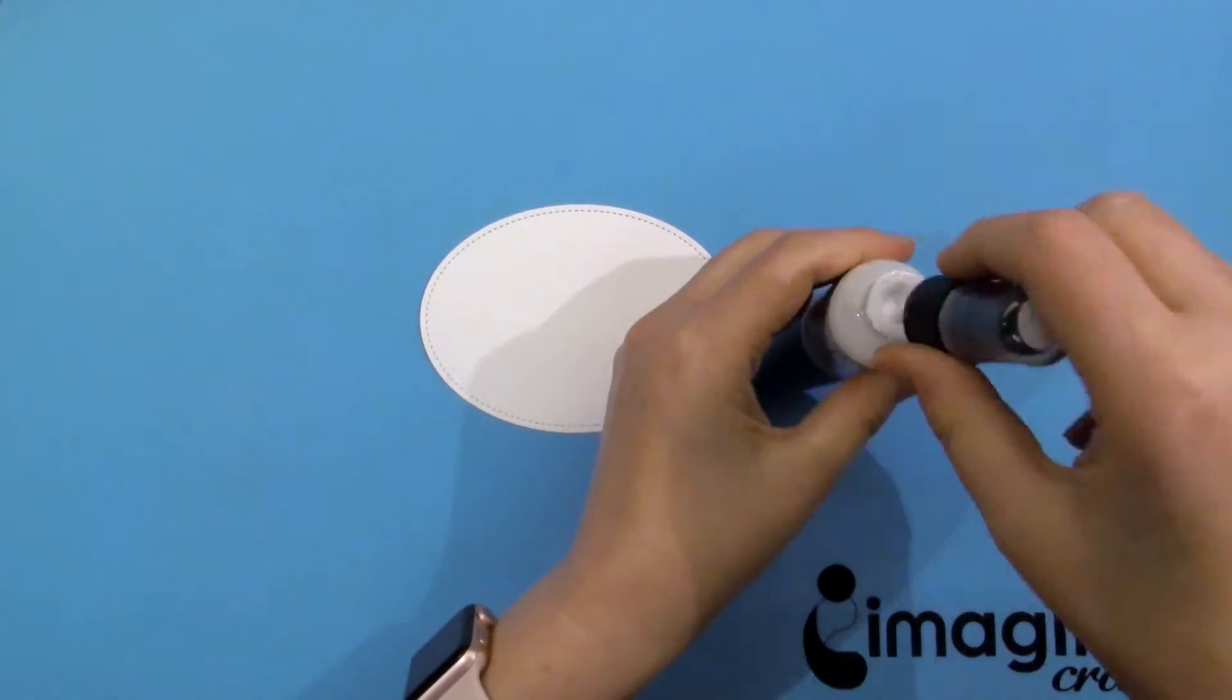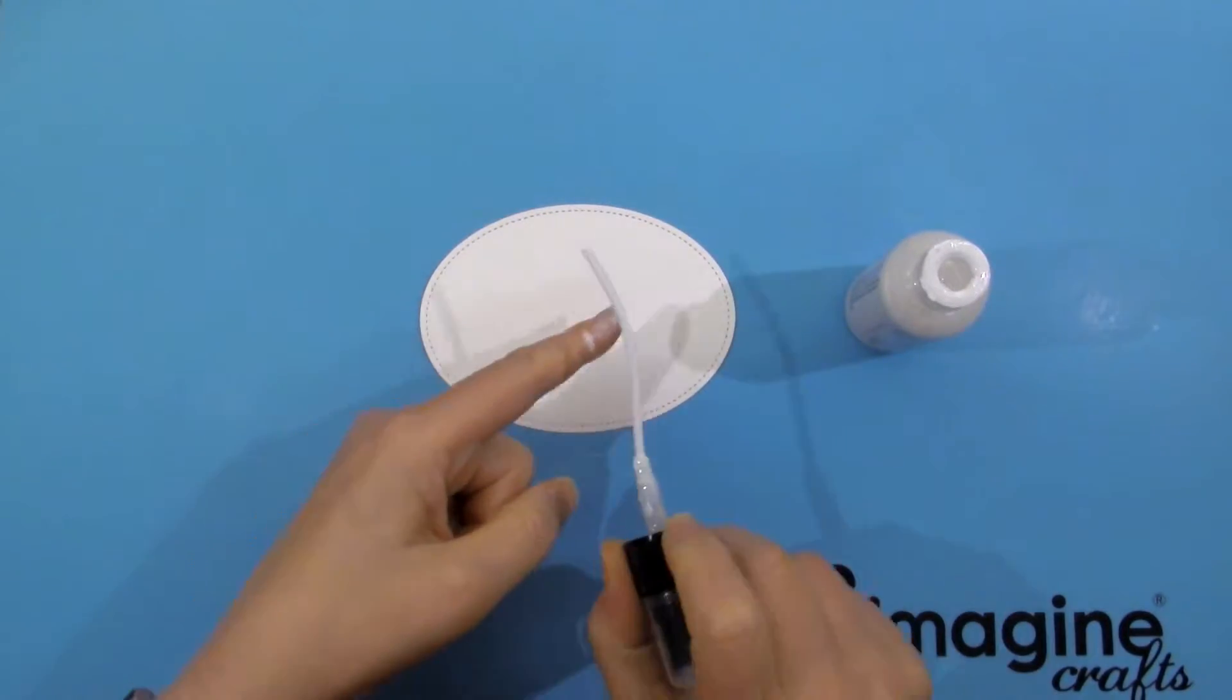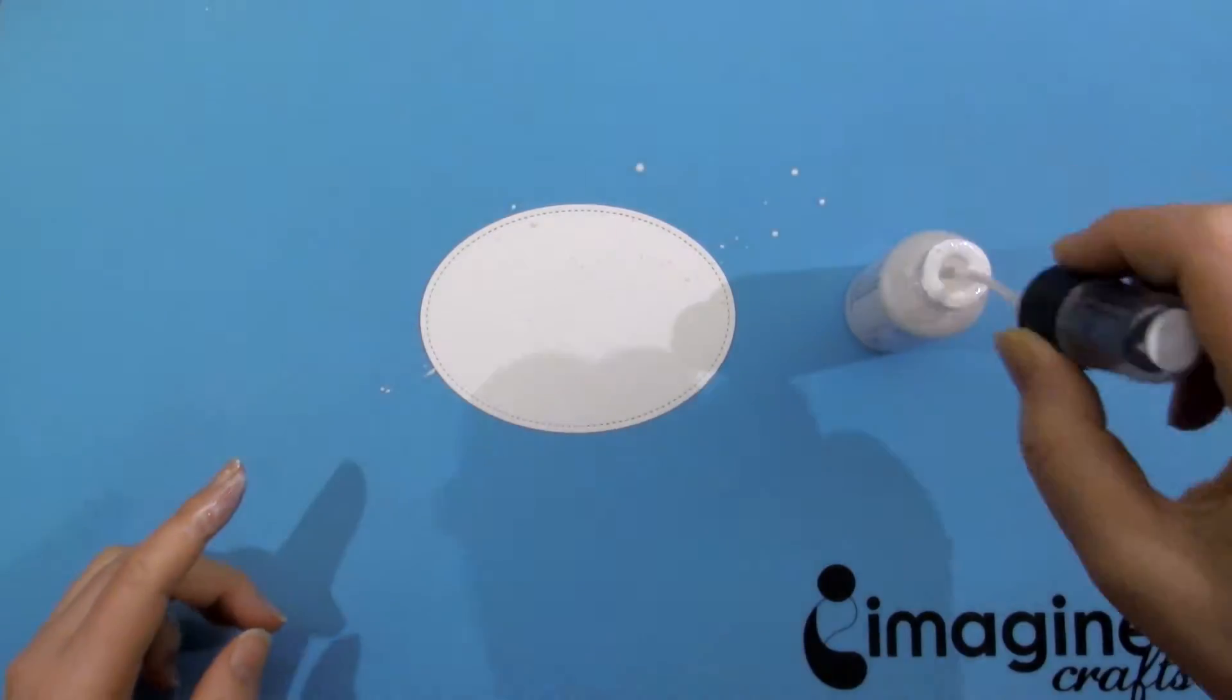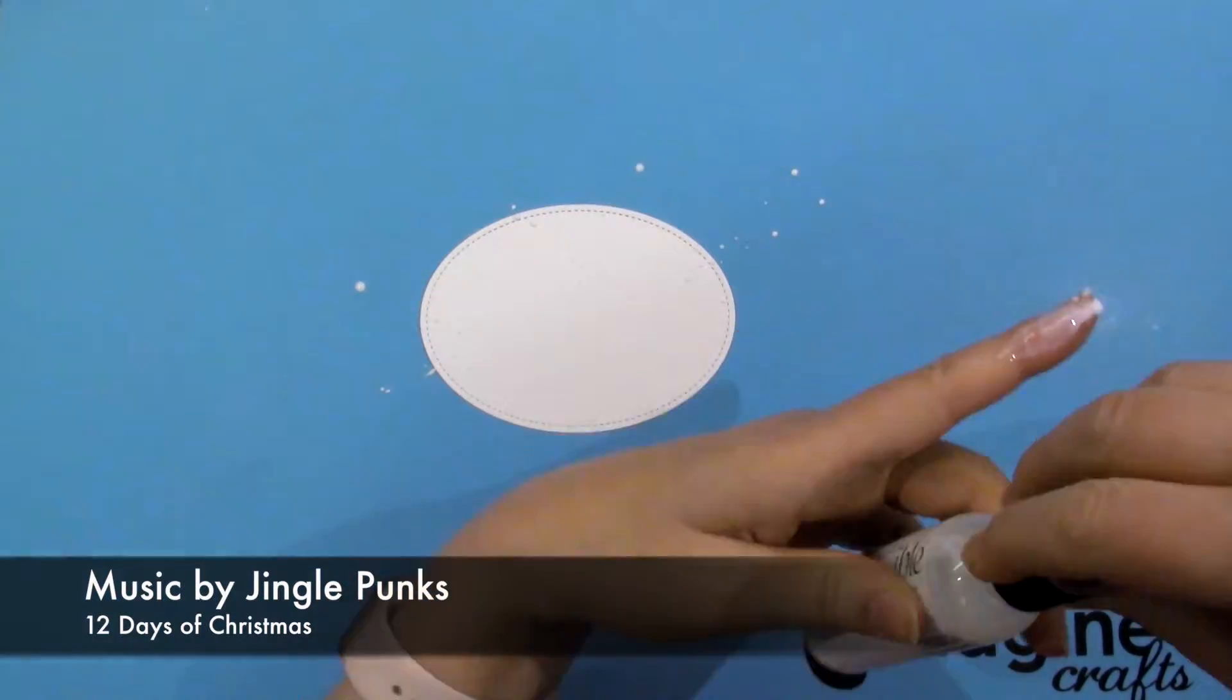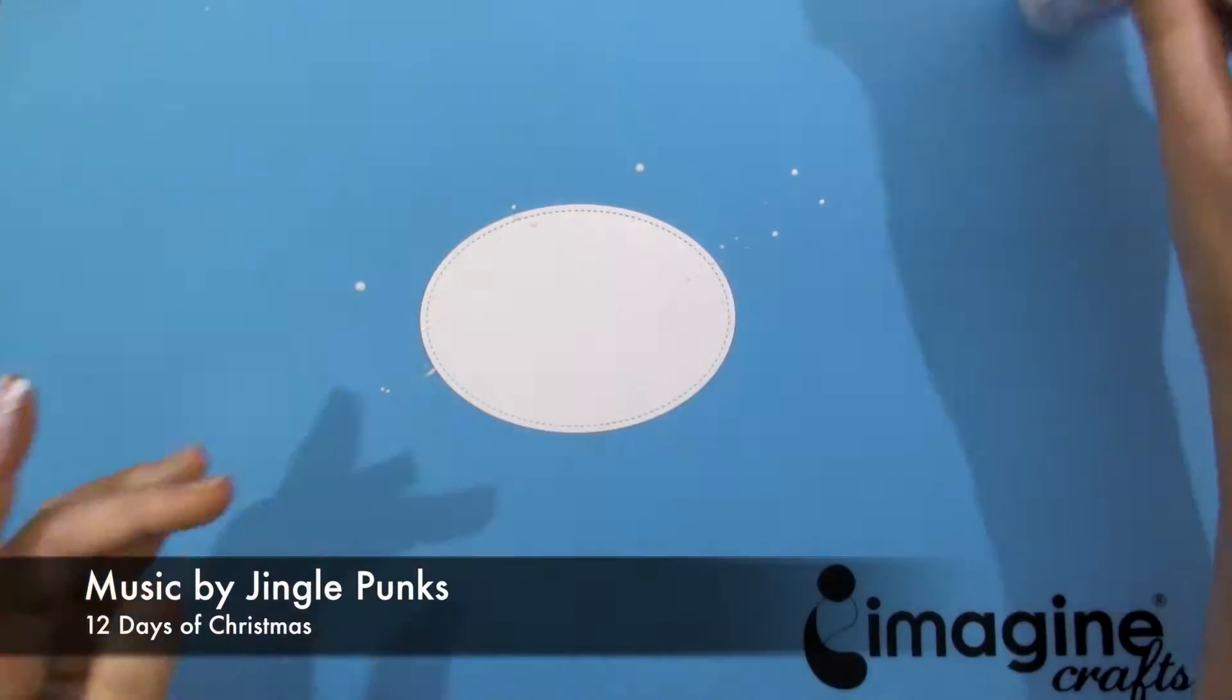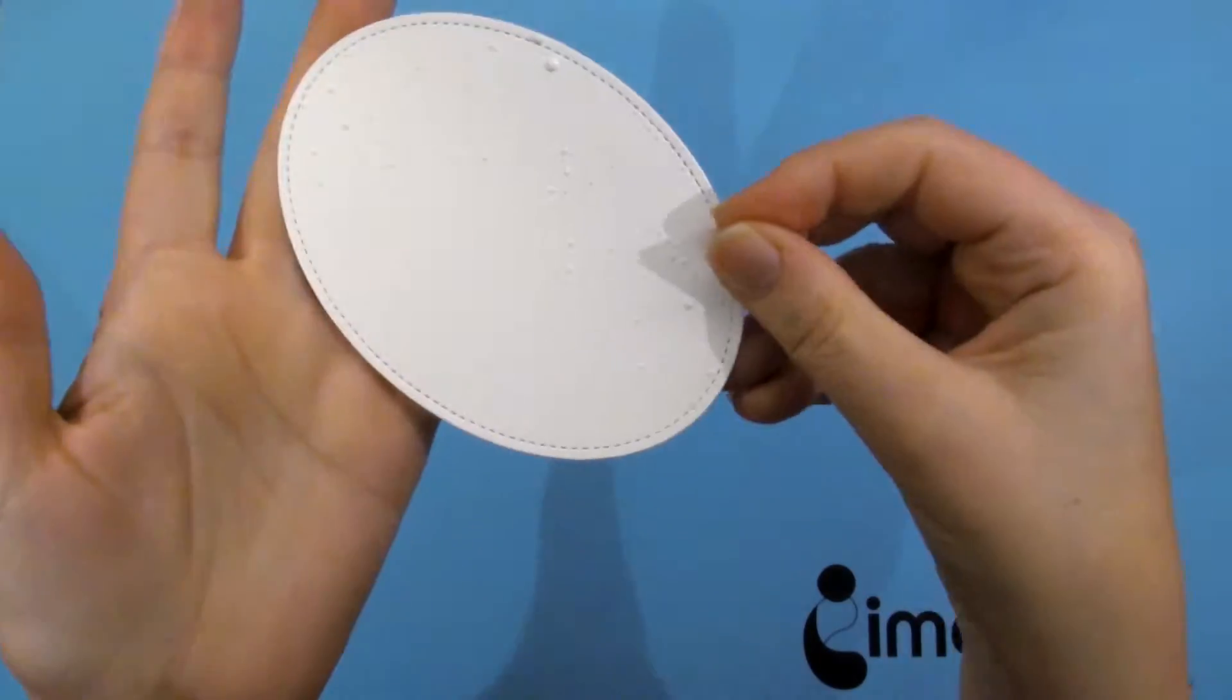I'm just going to unscrew the top and use the inside sprayer to tap on my finger and get some dots. I'm going to do this all over the oval. I'll bring this up closer to the camera so you can see the results.